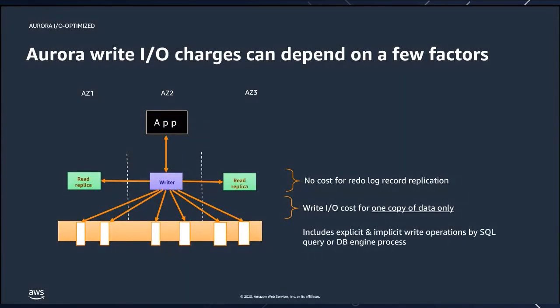IOs are usually consumed by operational activity, read operations, or write operations. Your write operations for Aurora can depend on a few factors, most often related to your workload pattern. For example, we had a customer moving data from an on-premise database into Aurora who also had an Aurora staging platform. They were writing twice — first into the Aurora staging database, then into their final Aurora destination. As you can imagine, this application pattern is very write intensive, so their write IO charges were quite a bit higher than what we would consider average.